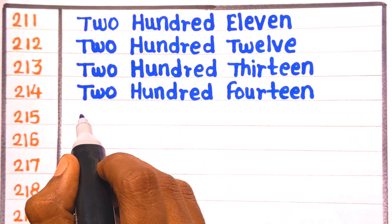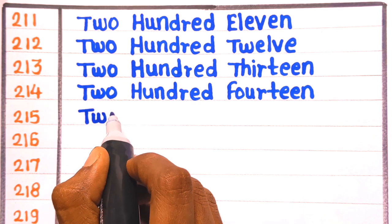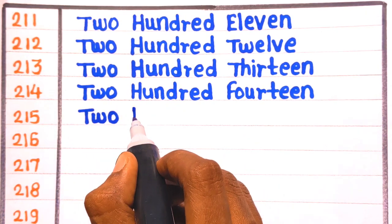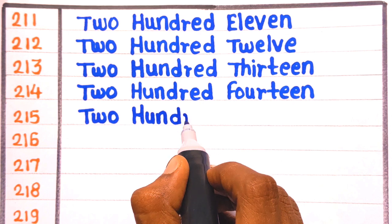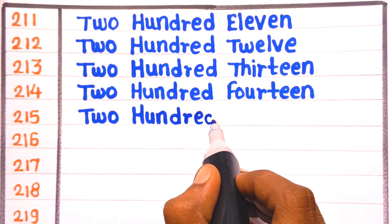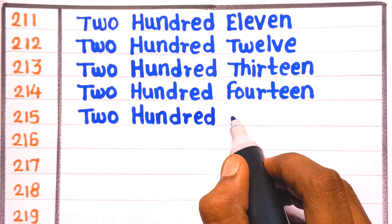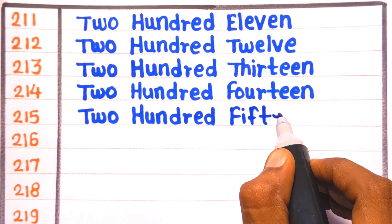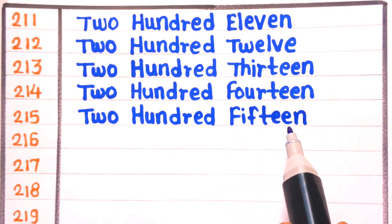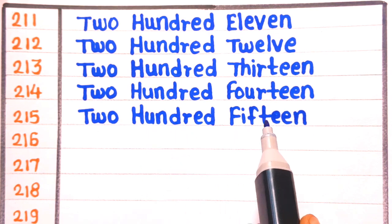Next is 215. Two hundred fifteen. T-W-O, two, H-U-N-D-R-E-D, hundred, F-I-F-T-E-E-N, fifteen. 215.